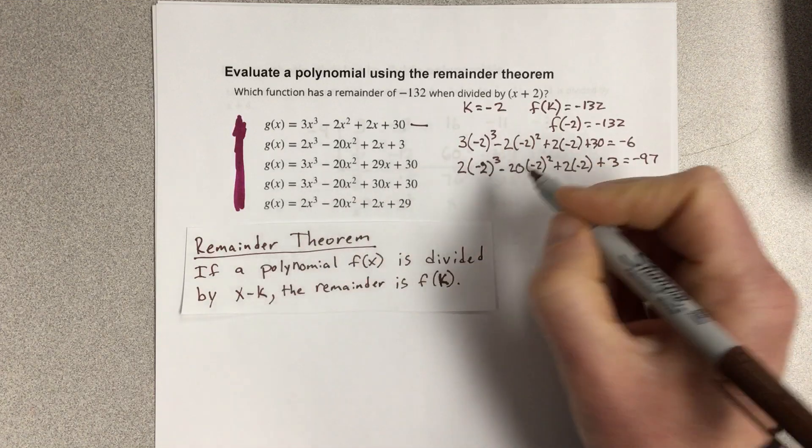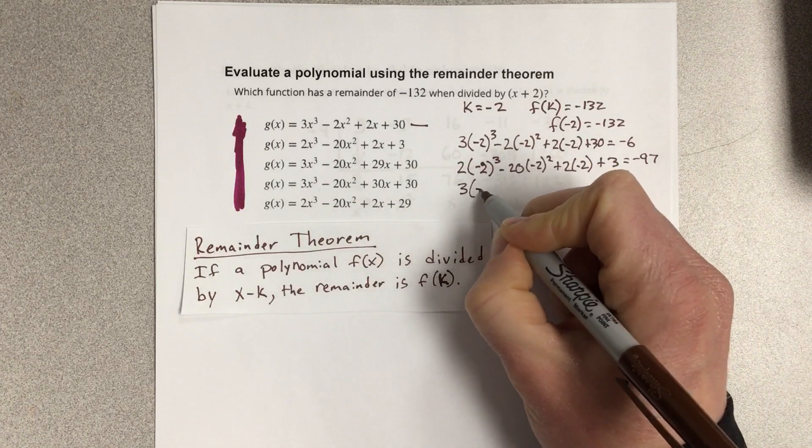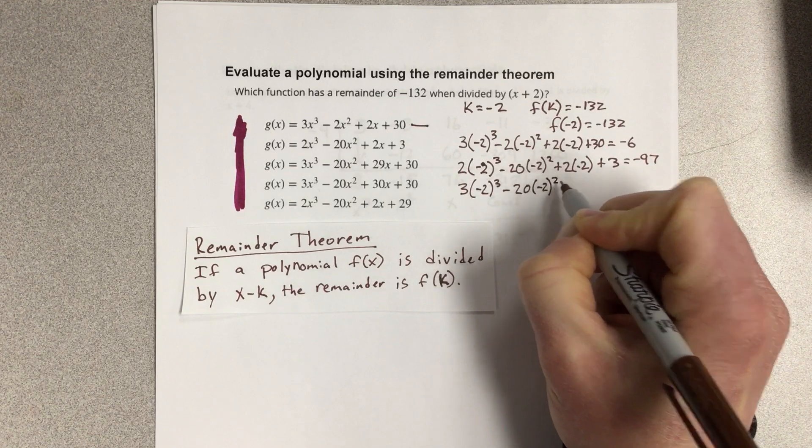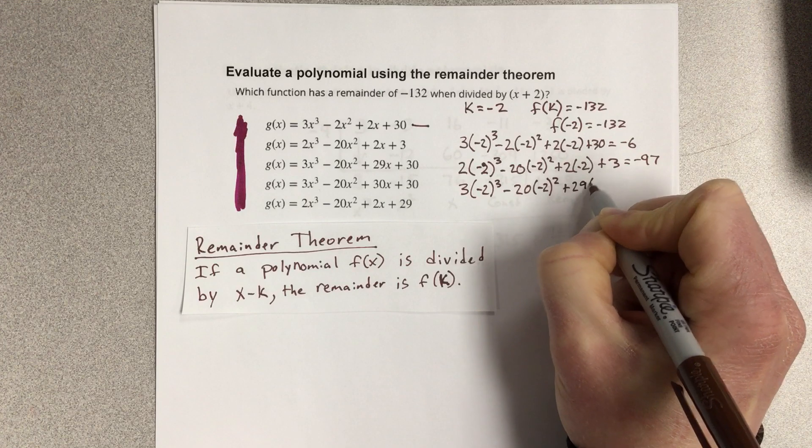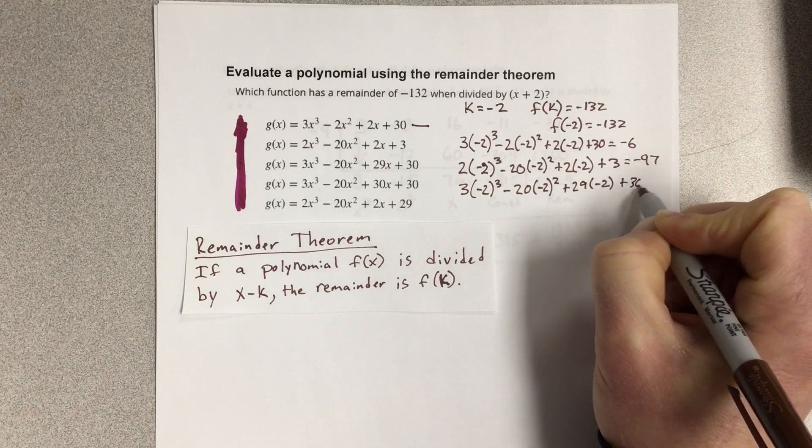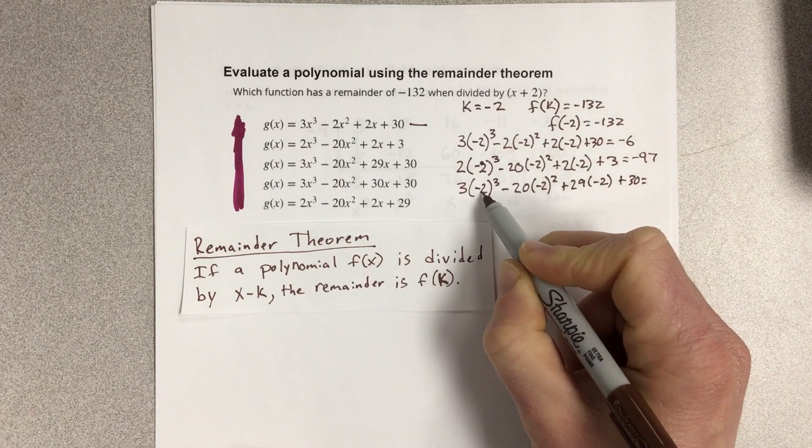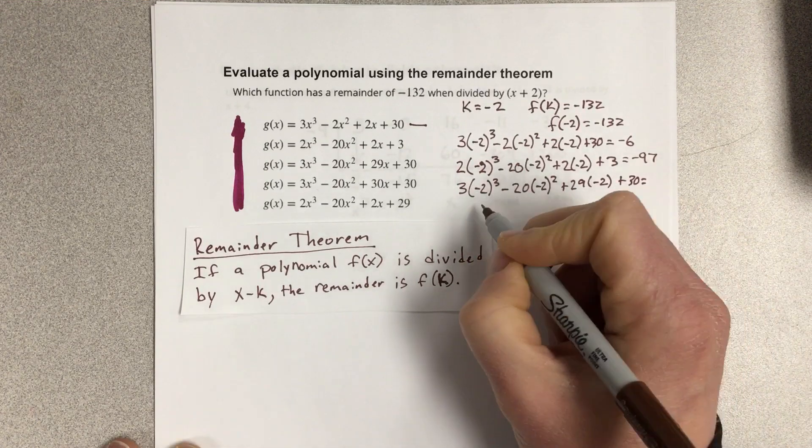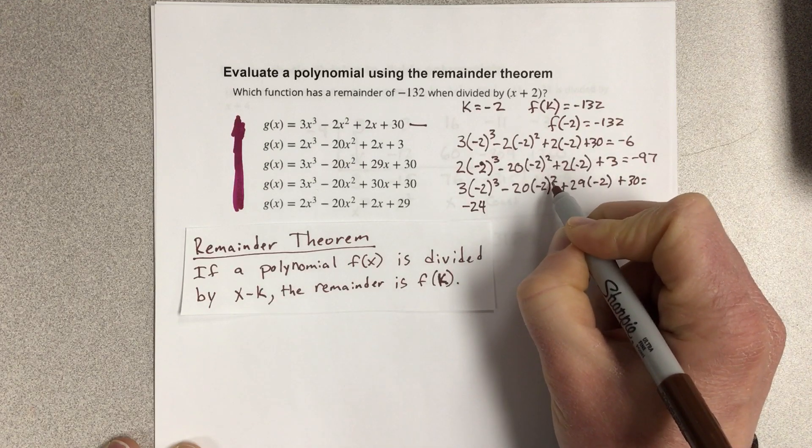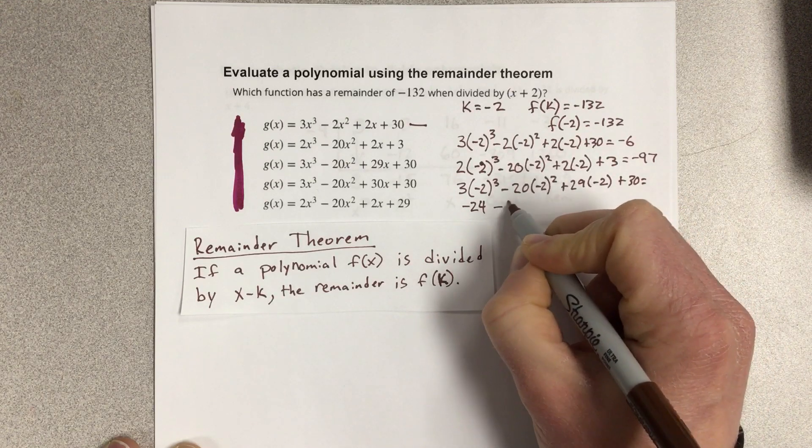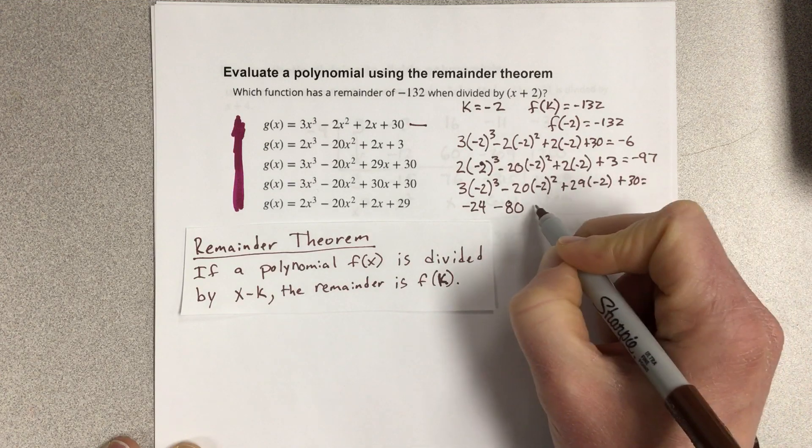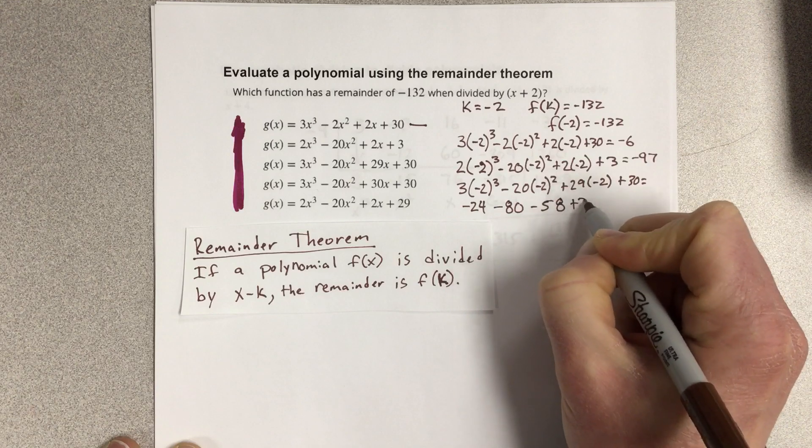So then you're going to plug in 3 negative 2 cubed minus 20 negative 2 squared plus 29 times negative 2 plus 30. When you do negative 2 cubed that's negative 8 times the 3 that's negative 24, this would be 4 times the negative 20 that's negative 80 minus 58 plus 30.